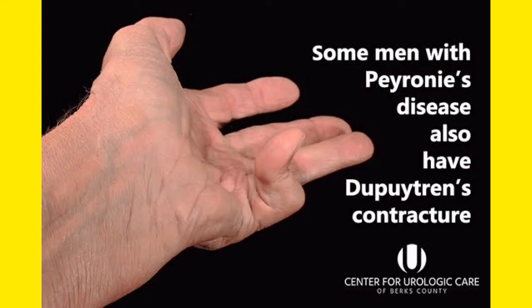As this slide shows, men with Peyronie's disease also have Dupuytren's contracture. In exams, they may show you the picture and ask the name of the contracture — the answer is Dupuytren's contracture. Or they may give a clinical scenario where the patient has bending of the ring and little fingers along with penile curvature, pain during erection, pain during sex, difficulty in sex, and depression — that is Peyronie's disease.